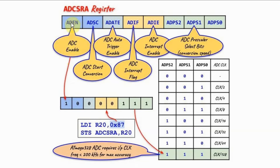This is the ADC control and status register, ADCSRA. One bit enables the ATD converter, another bit starts the conversion, and the auto trigger enable bit will not be used in this video so it is assumed 0. The interrupt flag bit is set when the conversion is done.